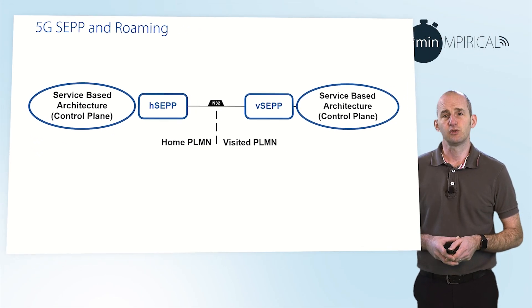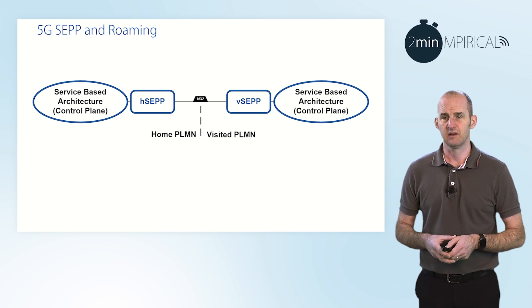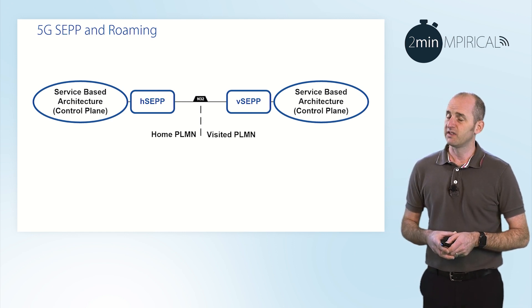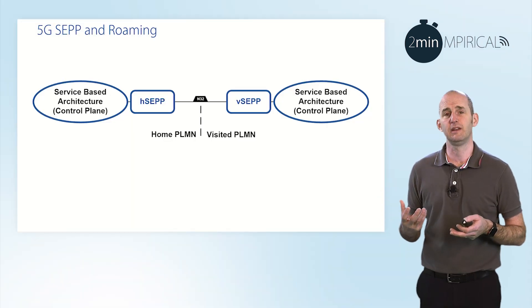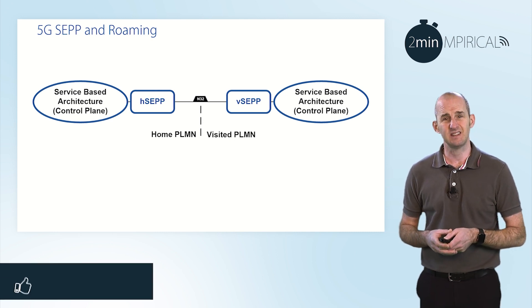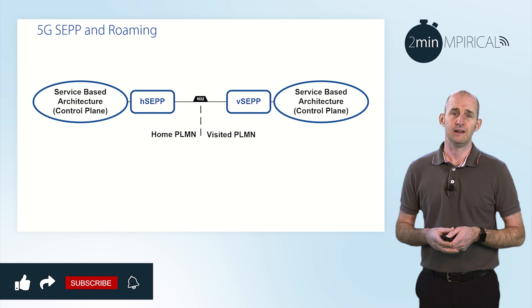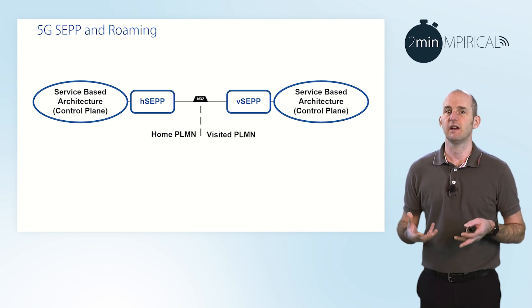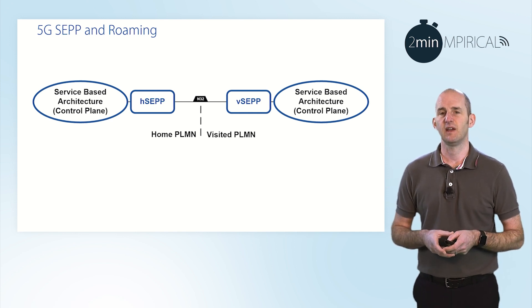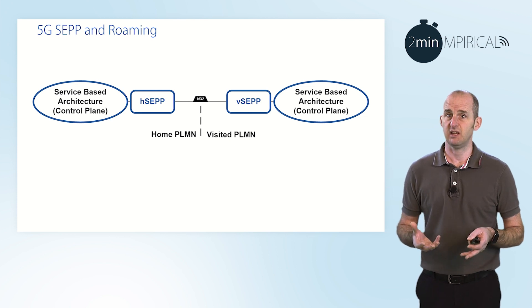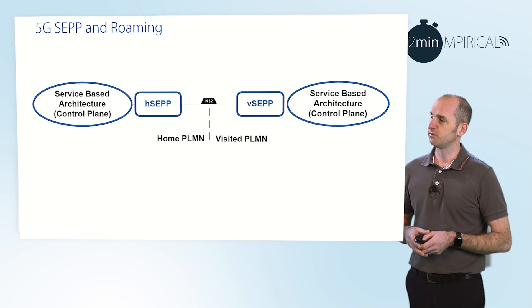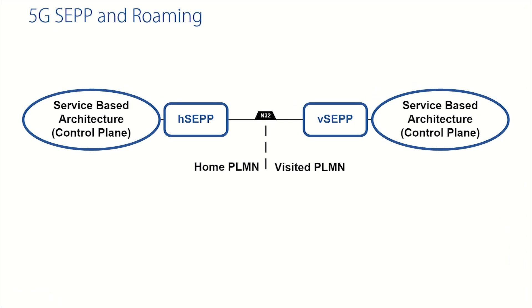It's only control plane traffic that we're dealing with here, so in effect we are dealing with the service-based interfaces that might be in place between two networks. The classic use case for that is roaming, because in roaming there's a lot of control plane traffic that gets exchanged between the visited network and the home network. In the case of 5G, that control plane traffic will be an API — a service-based interface — so we're dealing with lots of HTTP traffic here.